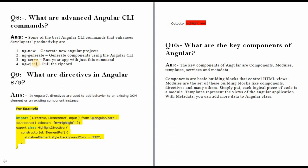Question number 9: what are directives in Angular 8 and 9? The interviewer will ask you directly for an example. You need to import the directive from Angular core library. Inside the decorator parentheses, define the selector. Then export the class, define the constructor, and use ElementRef to access the native element style — for example, changing the background color to red.